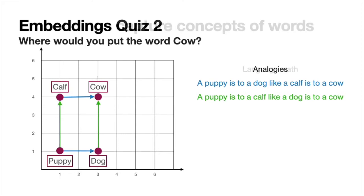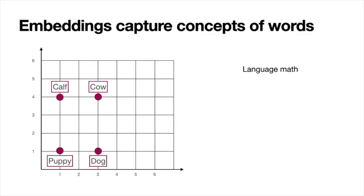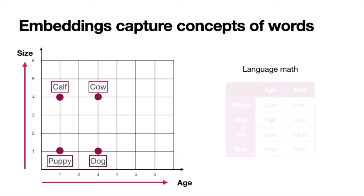More than analogies, I like to think of these as word math. The embedding captures important information on its axes. Looking at the horizontal axis, as you move to the right the animal gets older — so this axis captures age. Looking at the vertical axis, as you move up the animal gets bigger, going from dog to cow — so this axis captures size. So the embedding is breaking each word into several properties and locating those properties on each axis. Puppy has low age and low size, and cow has high age and high size.